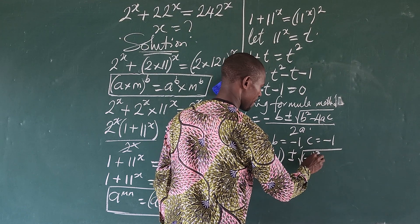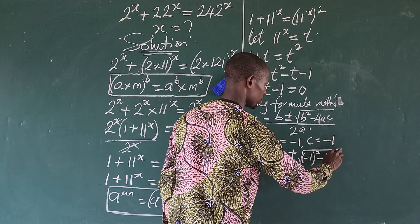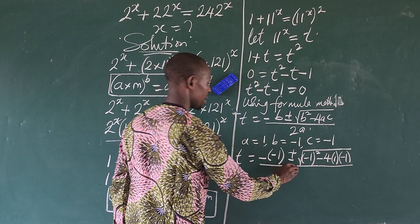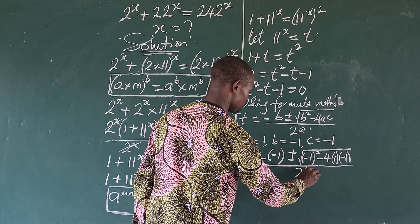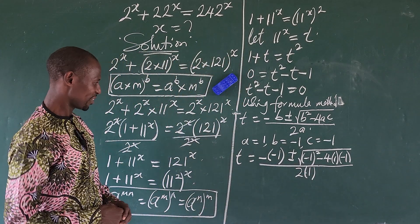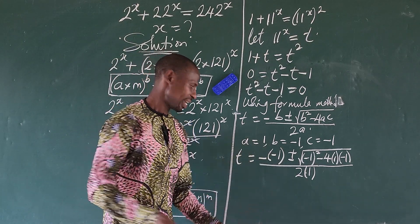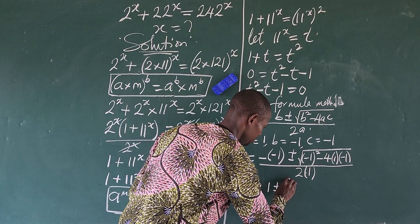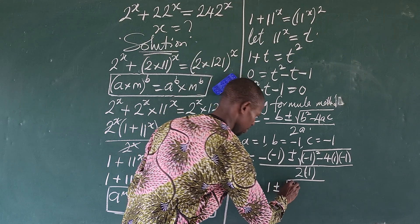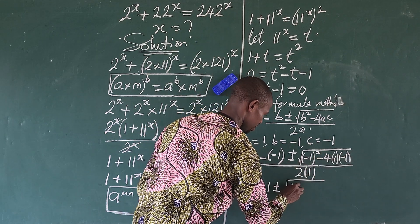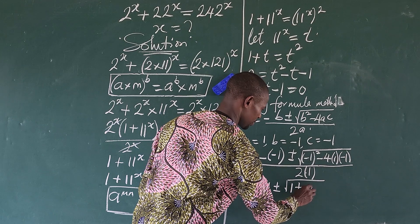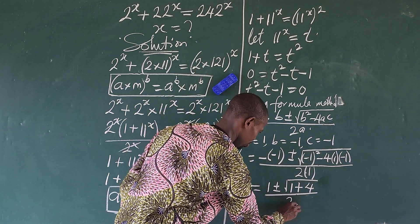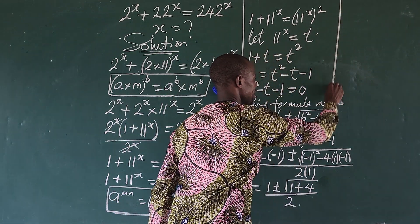Substituting into the formula: t equals minus (−1) plus or minus the square root of (−1) squared minus 4 times 1 times (−1), all over 2 times 1. The double negative gives us plus 1; (−1) squared gives 1; and minus times minus gives plus, so 4 times 1 times 1 gives 4. This simplifies to t equals (1 ± √5) all over 2.